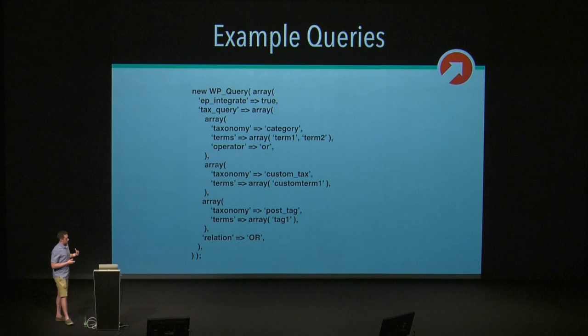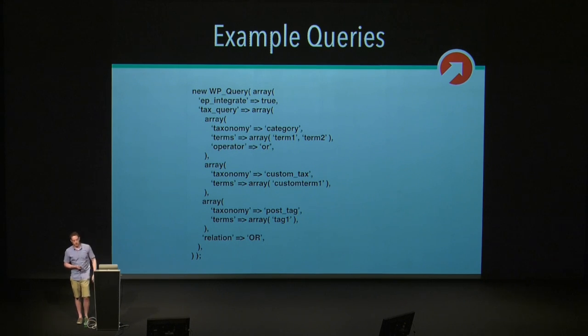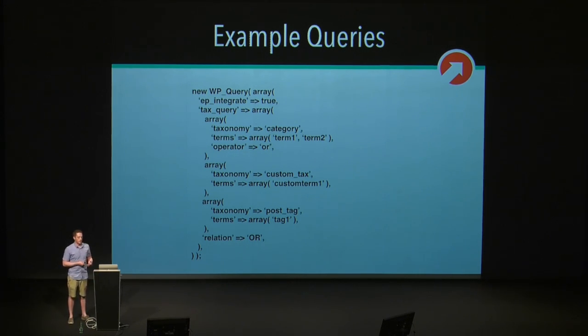Here's another query — this one isn't a search query, but we're passing EP integrate true. We're doing a three-dimensional taxonomy query. Doing a three-dimensional taxonomy query in WordPress right now is very, very slow — obviously that depends on the size of your terms table. Doing a three-dimensional query on a production website that receives a lot of traffic is pretty dangerous. With ElasticPress, we can accomplish those things very, very performantly. Same thing with a three-dimensional meta query — we use the EP integrate parameter, and we could go to as many dimensions as we want and all of that happens performantly.